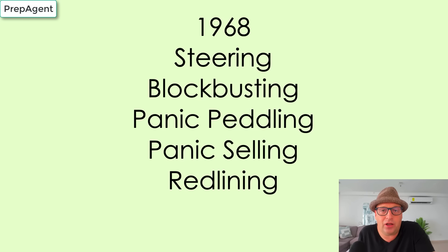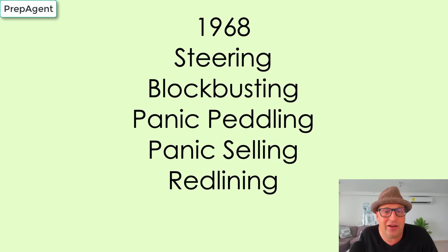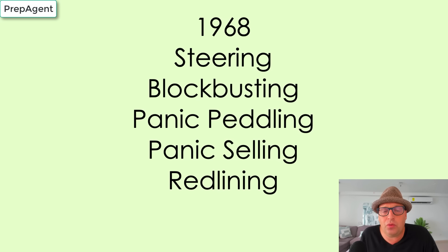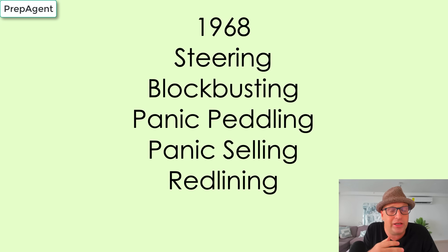You need to know fair housing laws — not only to pass your real estate exam, but also to be a good real estate agent. Fair housing laws deal with discrimination and were enacted in 1968, a good year to know. Violations you should know include steering, blockbusting, panic peddling, panic selling, and redlining. Steering is when you tell buyers they should live in a certain neighborhood based on their racial or ethnic makeup — you're driving buyers to an area you believe they should go, which is a violation of the Fair Housing Act.